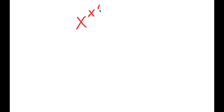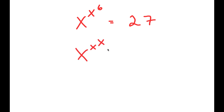In this video, I'm going to solve the equation x to the power of x to the power of 6 is equal to 27. To solve this, I'm going to first rewrite this as x to the power of x to the power of 6 is equal to 3 to the power of 3.